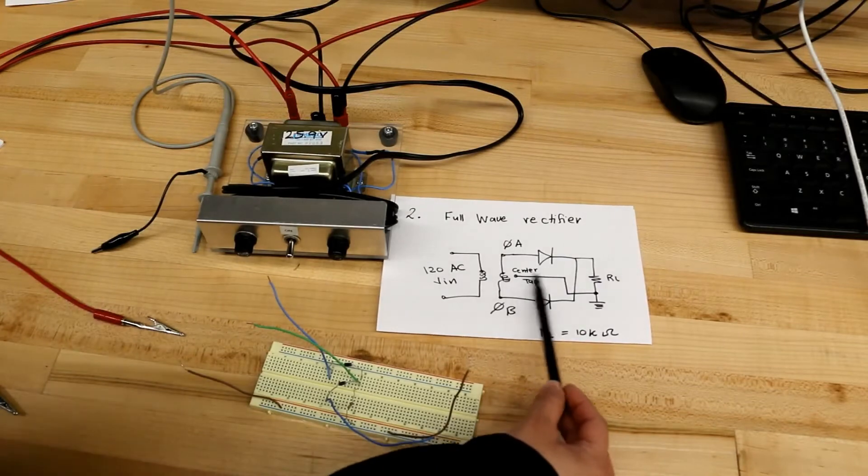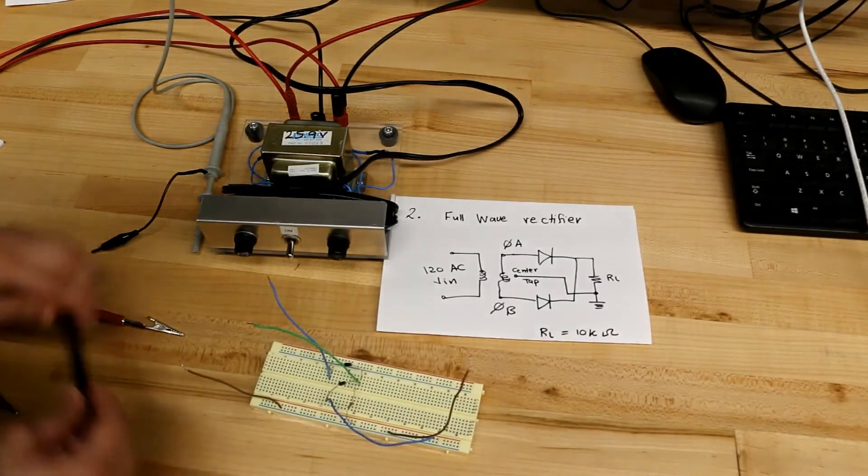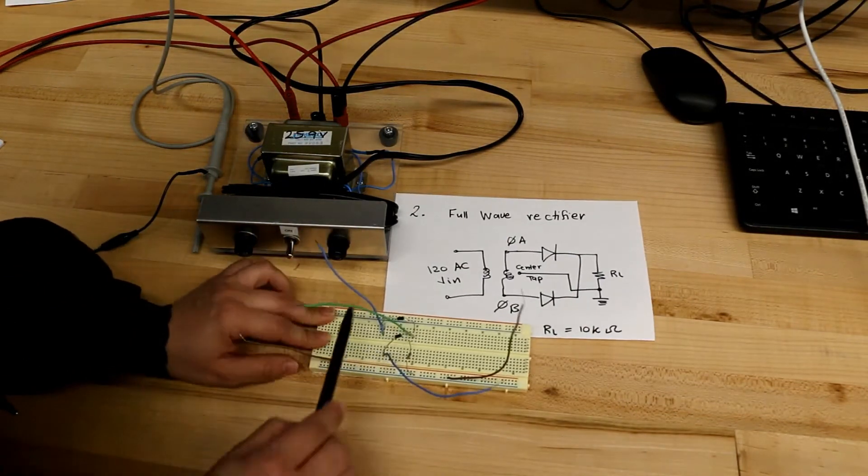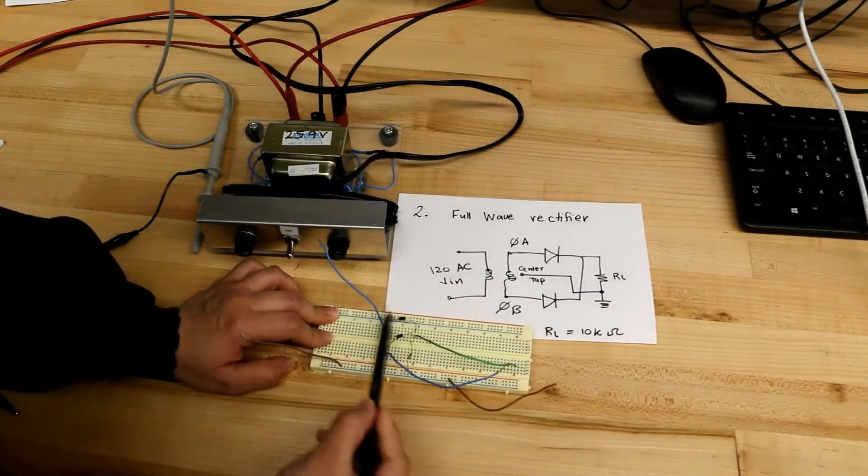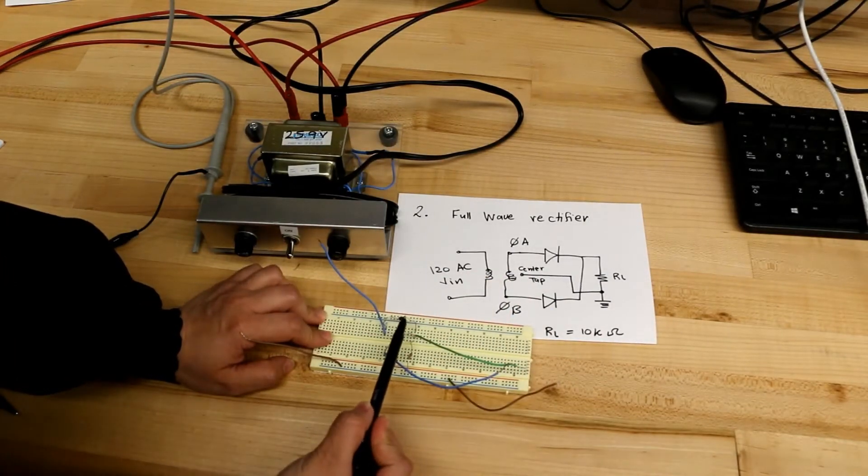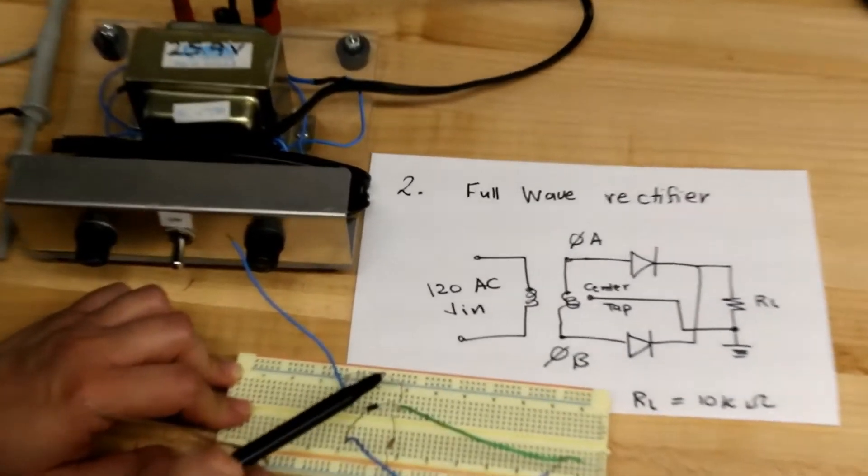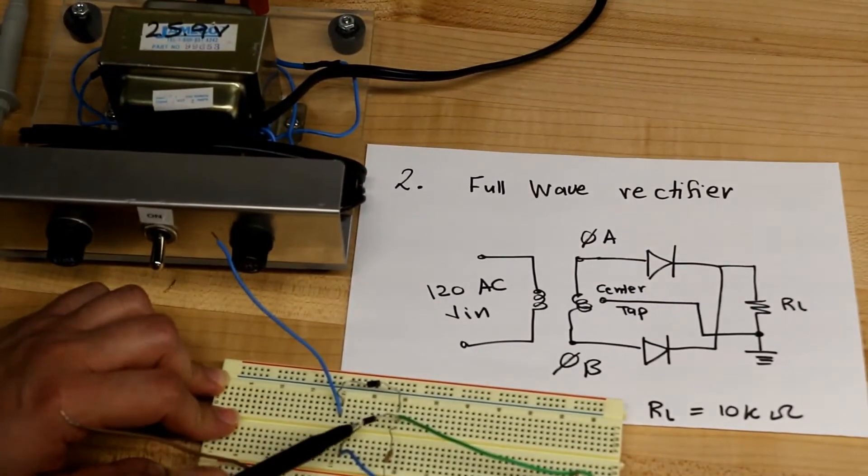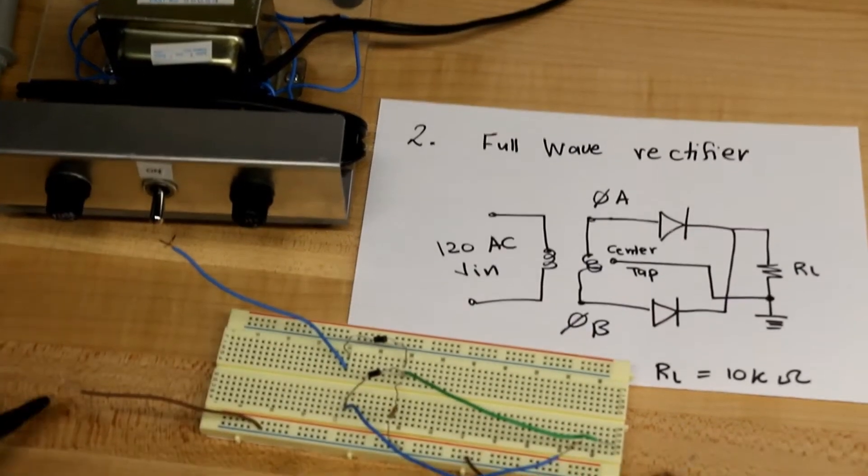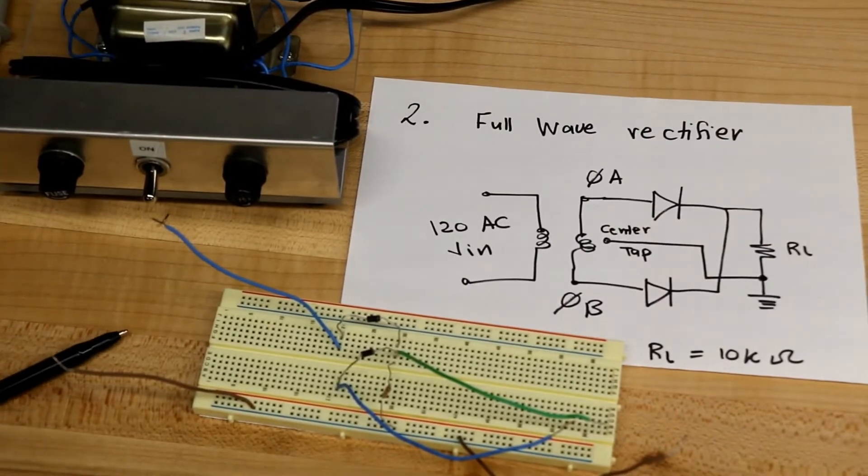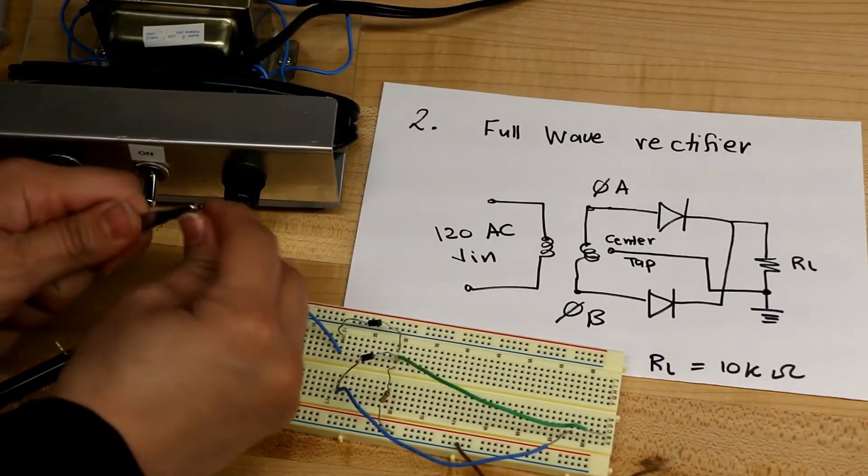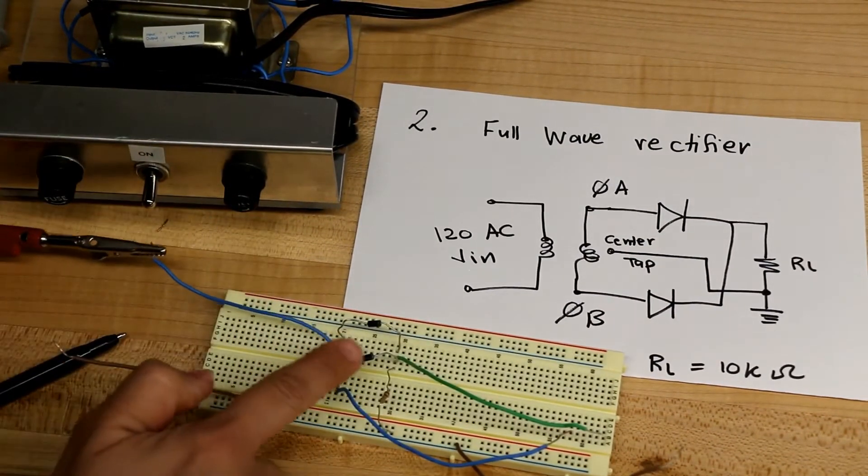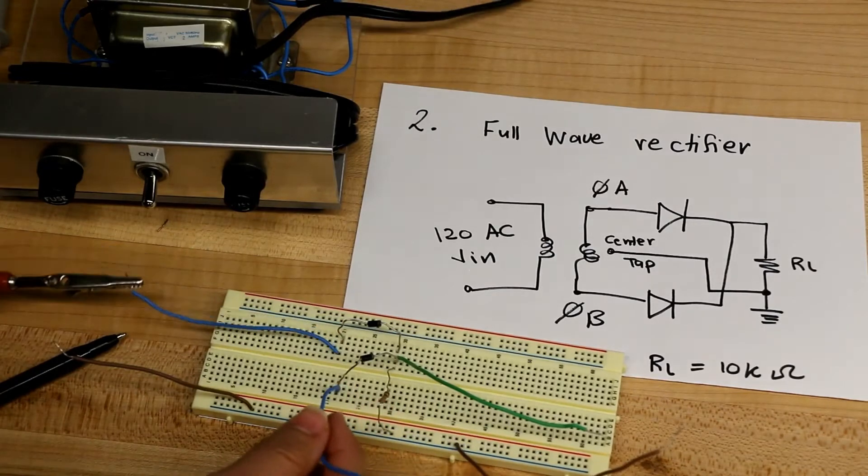The center tap is connected also to the ground. So here's the two diodes. There's the first diode. Here's the silver band, so the silver band is the cathode. Here's the second one. So the first diode is connected to the first phase of the transformer, the second diode is connected to the second phase of the transformer.